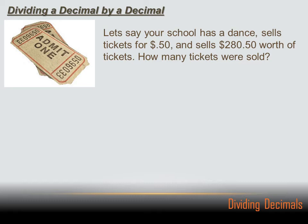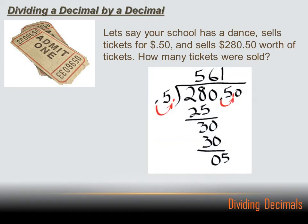Let's say your school has a dance, sells tickets for 50 cents, and sells $280.50 worth of tickets. How many tickets were sold? Well, let's do the math. I've got $280.50 worth of tickets that were sold at 50 cents a piece. So I've got to divide that 280.5 by .5.